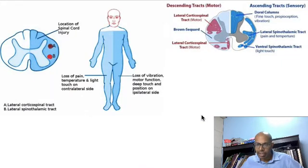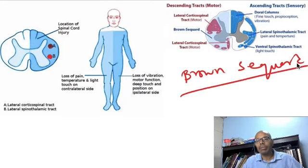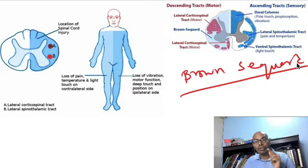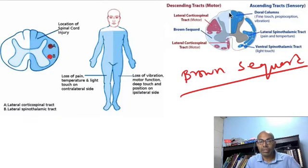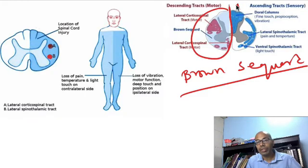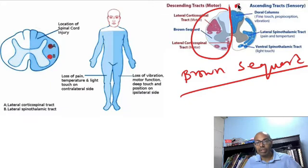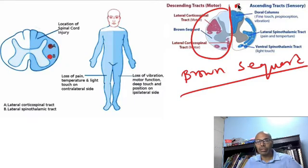The third most common type is Brown-Séquard syndrome. We all know it well because it's a named syndrome. It is common in the West due to penetrating injuries — knife or bullet wounds — and less common in India. It involves hemisection of one side of the spinal cord. As discussed, the motor tracts descend without crossing over, so Brown-Séquard syndrome produces ipsilateral motor loss.